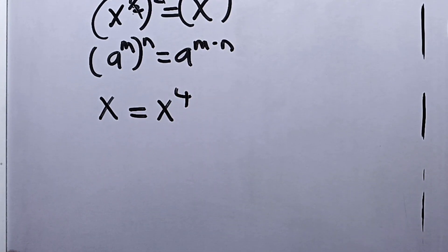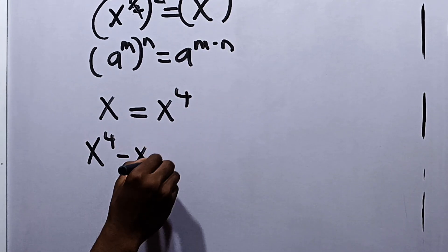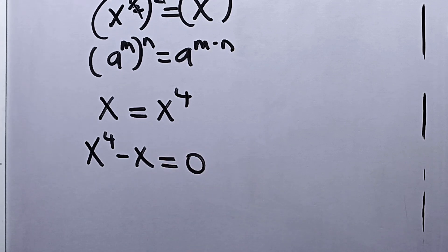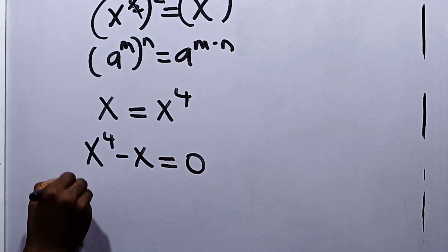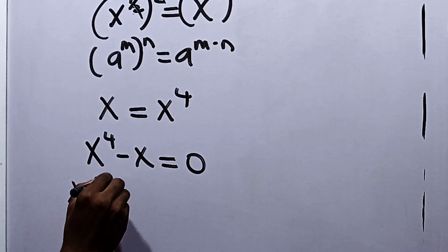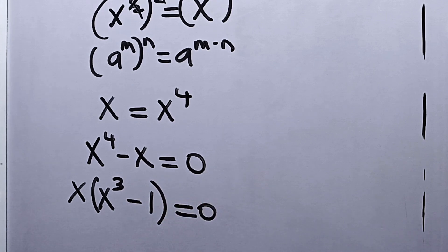Now from here we now have that our x raised to the power 4 minus x is equal to 0. Now at this point, let's factor out x from this equation. So we have x factored out into x raised to the power 3 minus 1 is equal to 0.